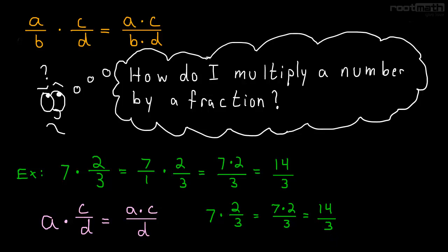So all we did was we skipped this step where we wrote 7 as 7 over 1. We don't need to really write that every time as long as we understand how all this works.